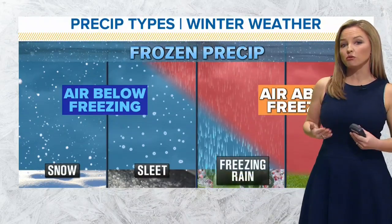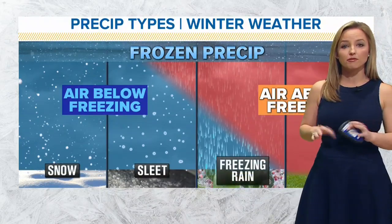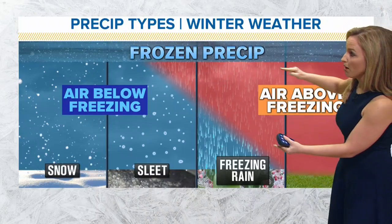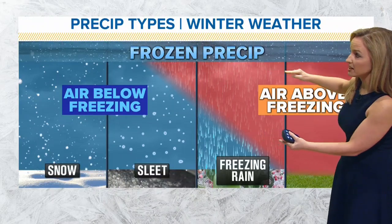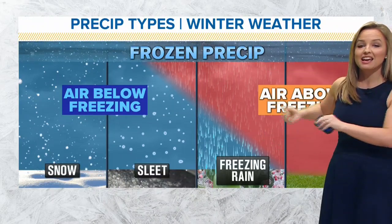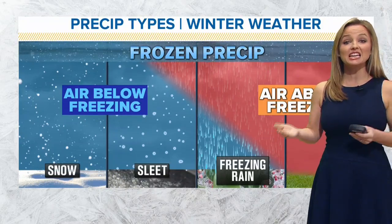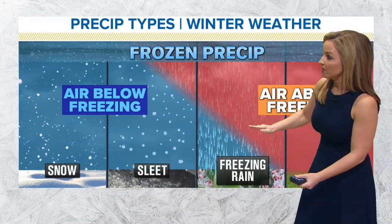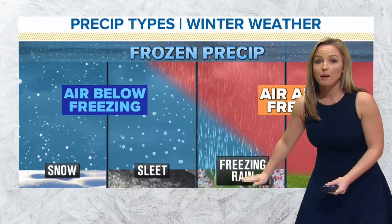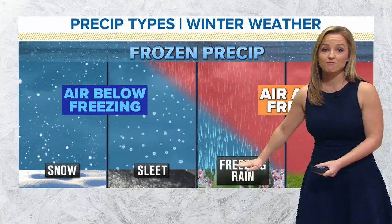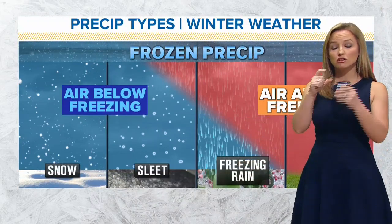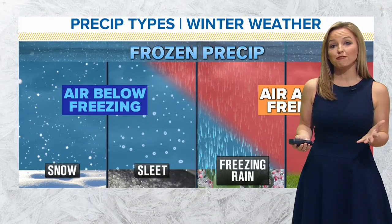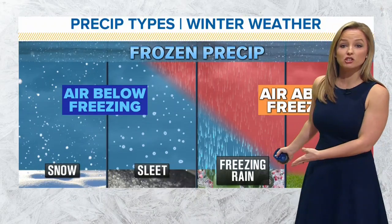Now, if we look at freezing rain — freezing rain and sleet are fairly similar. That warm wedge of air that's in there melts the ice crystal to rain. The difference between sleet and freezing rain is that the area below the warm layer is much more shallow, so it doesn't have enough time to refreeze before it hits the surface.